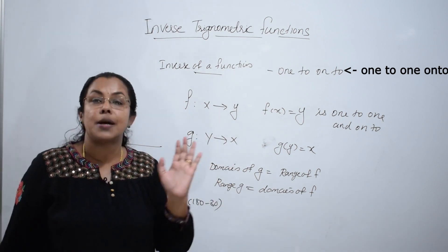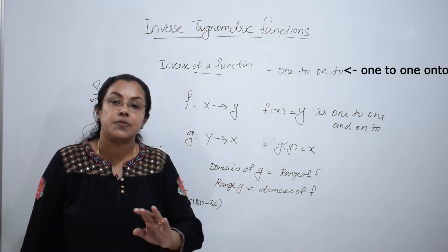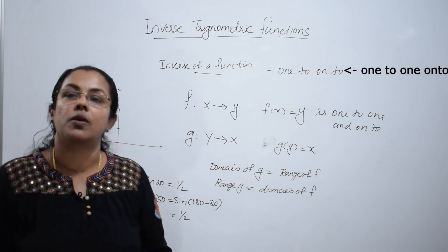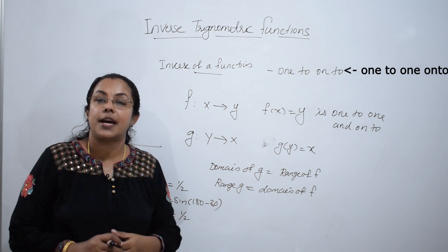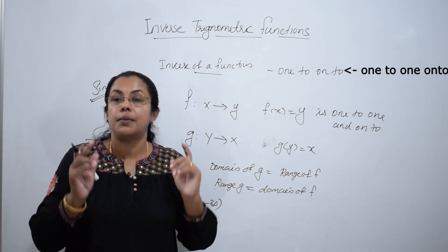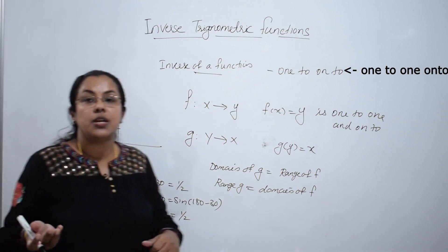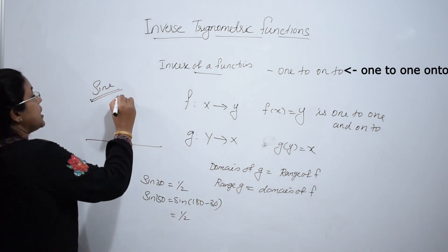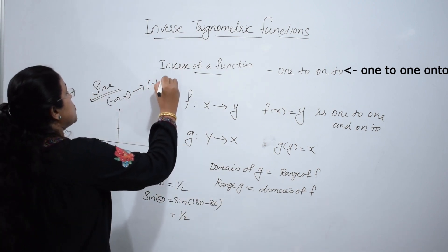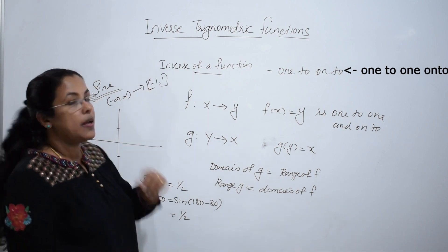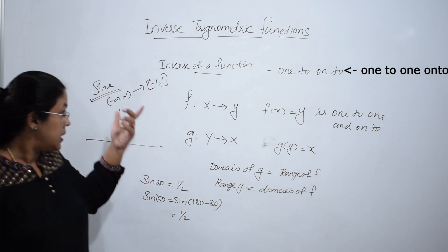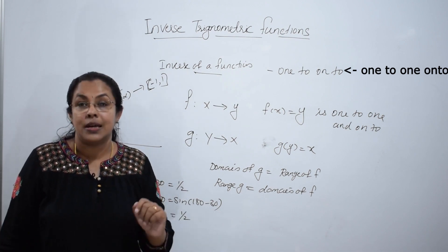Sine 30 equals 1 by 2, and sine 150 — that is sine of (180 minus 30) — is also equal to 1 by 2. So it is a many to one function. Trigonometric functions are periodic functions which repeat after some intervals. So, it is not a one to one function — it is a many to one function.